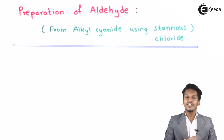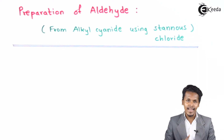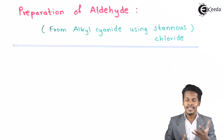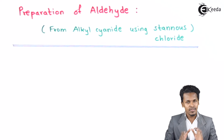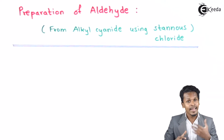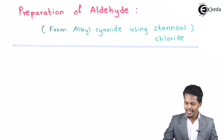So this is a topic where we are going to discuss how we can prepare an aldehyde using an alkyl cyanide as well as a reagent that is stannous chloride (SnCl₂). Let me discuss the general reaction here and then we will discuss examples as well.